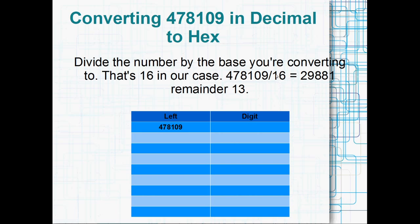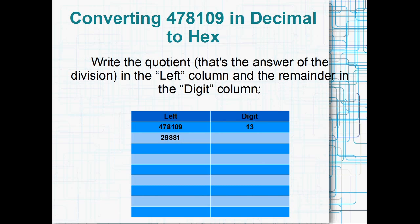And it's basically just about a bunch of divisions and getting the remainder each time. So I draw out two columns, left and digit. And I put the original number, 478,109 in the left column. And then I divide that by the base. So the base that we're converting to, that is, this time it's 16. In the previous video it was 2, but this time it's 16. So 478,109 divided by 16 gives you 29,881 remainder 13. So I write the quotient, which is the answer to the division, the whole part of the answer, which was 29,881, I write that in the left column. And the remainder, which was 13, I put that in the digit column.